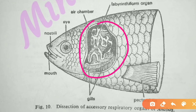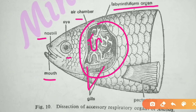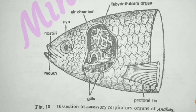Looking at the dissection diagram of Anabas: there are folds visible which form the labyrinth — this is called the labyrinth organ. The black portion represents the air chamber. The diagram also shows the eyes, nose, mouth, gills, and pectoral fin. This is the dissection of accessory respiratory organs of Anabas.